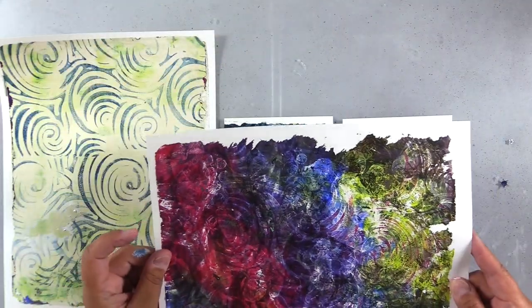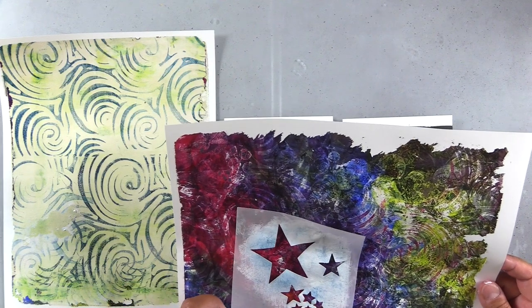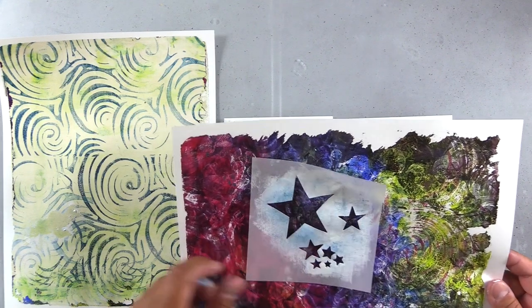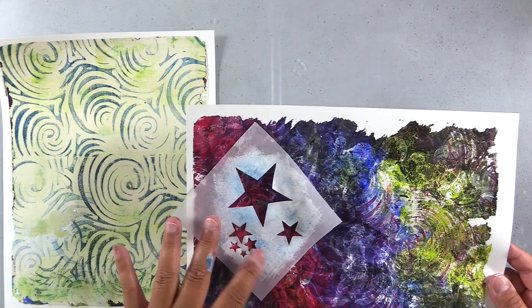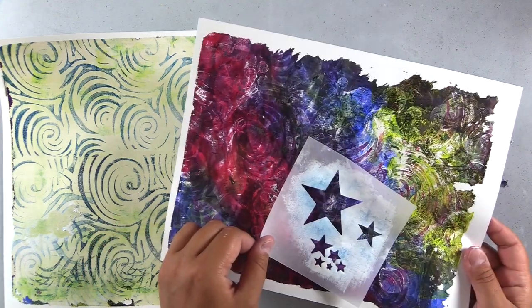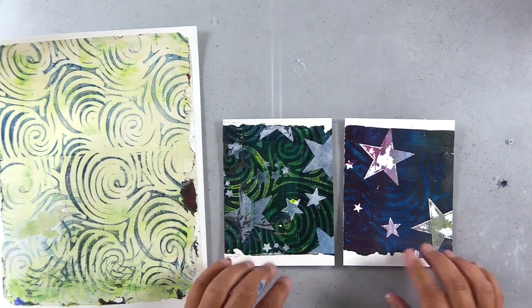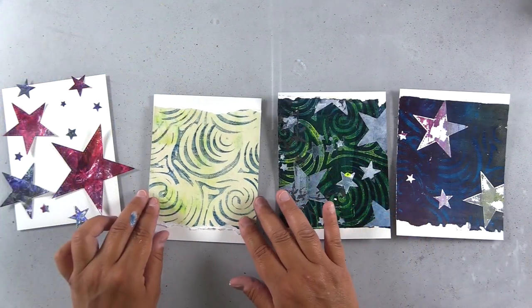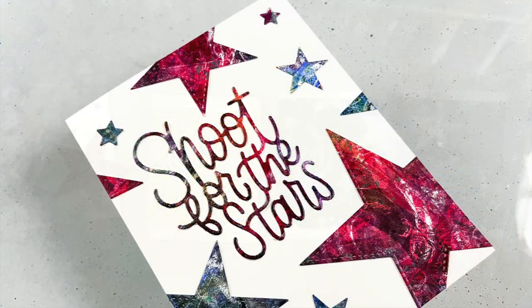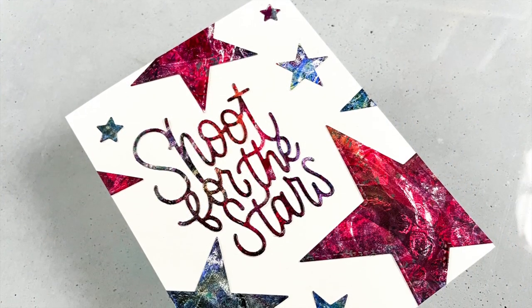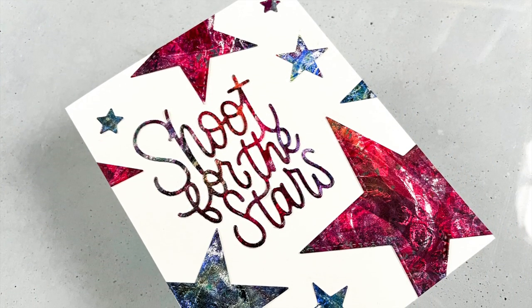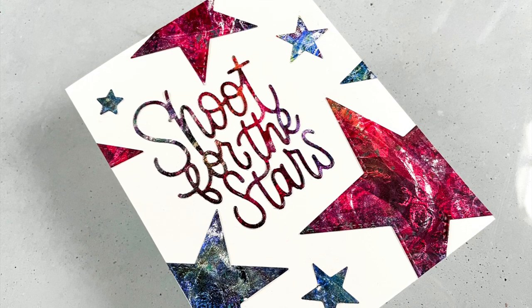Here are the prints, and the solution for this print that I totally hated in the beginning, total fail gel print, is I'm going to die cut it. So I'm just going to cut some stars out of here because as a whole it's too much, but as die cuts it's going to work. And check out those die cuts, they look great. So if you have a gel print that's a total fail, try and use it in a different way. Die cutting it into smaller pieces can be really helpful.